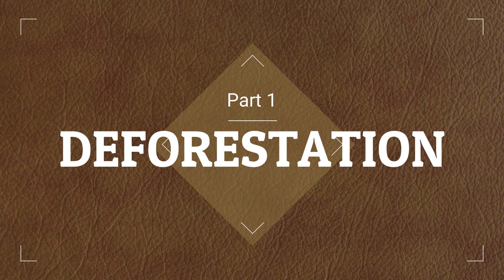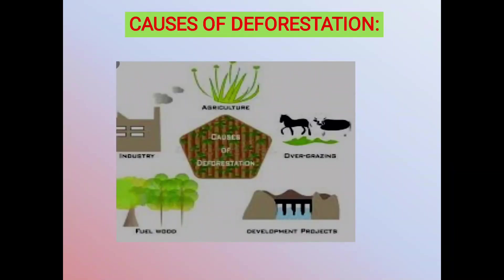Deforestation means the removal of trees or other such plants from a land area without intention of reforesting it or replanting it. It started long back when man invented fire. He also exploited forests for food, shelter, agriculture, and to meet his other needs.